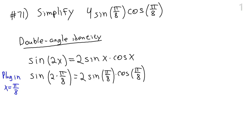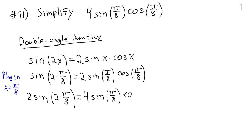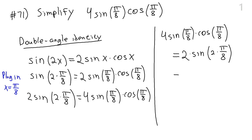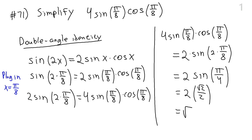We almost have our expression, but there's a factor of four in front and we have a two on the right side. Multiplying both sides by two gives: two times sine of pi over four equals four times sine of pi over eight times cosine of pi over eight. So four times sine of pi over eight times cosine of pi over eight equals two times sine of pi over four. Since sine of pi over four is radical two over two, we get two times radical two over two, which equals radical two.